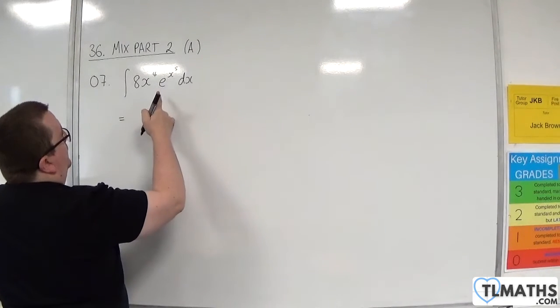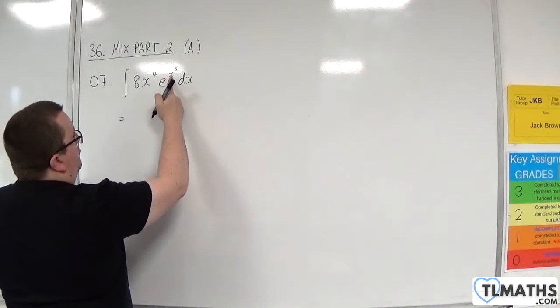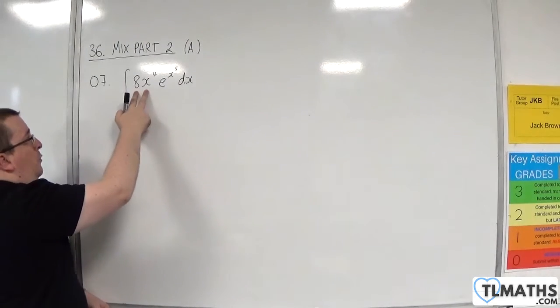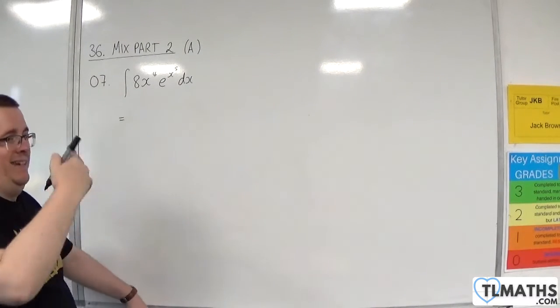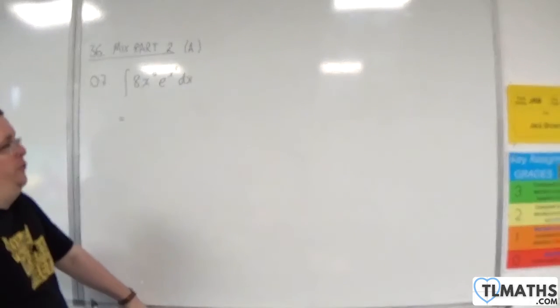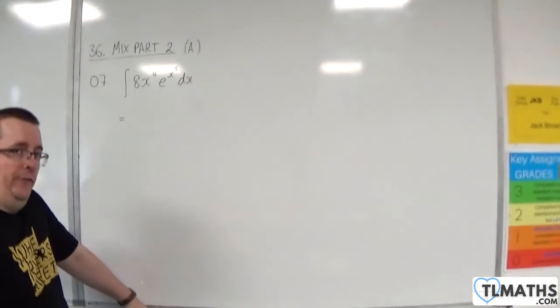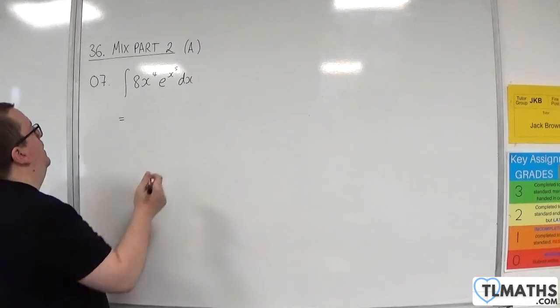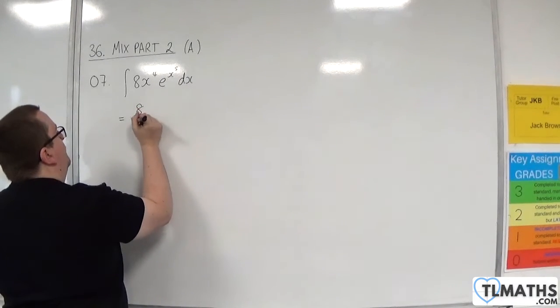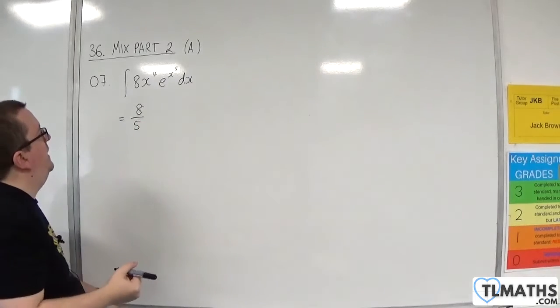So, we know that x to the 5 differentiates to 5x to the 4, but we've got 8x to the 4. So we've actually got 8 fifths of what I need. So, 8 fifths of what I need.